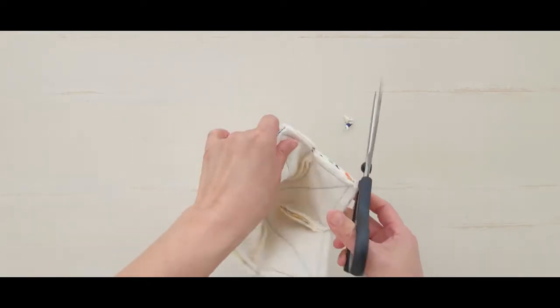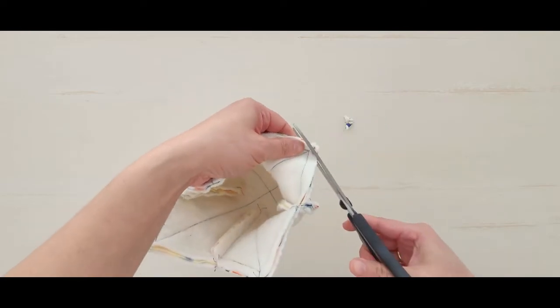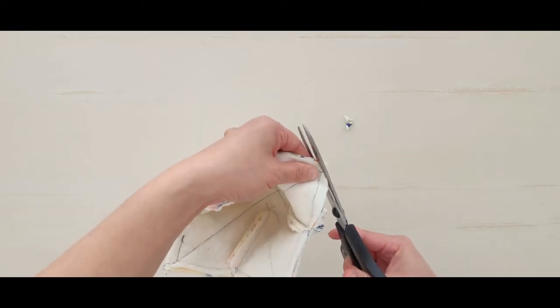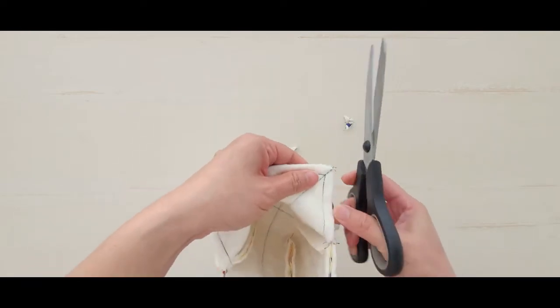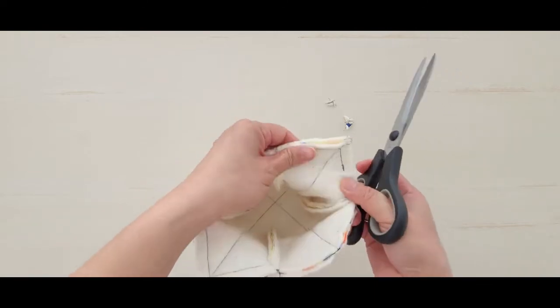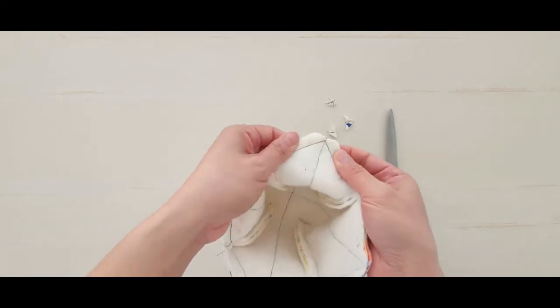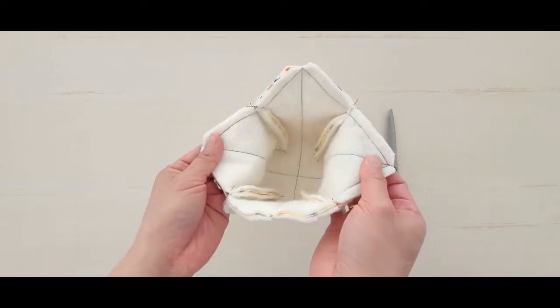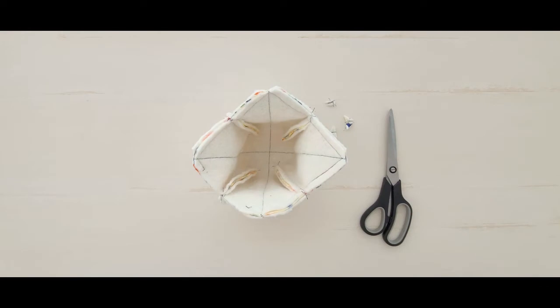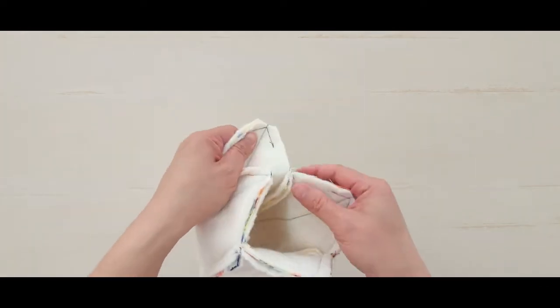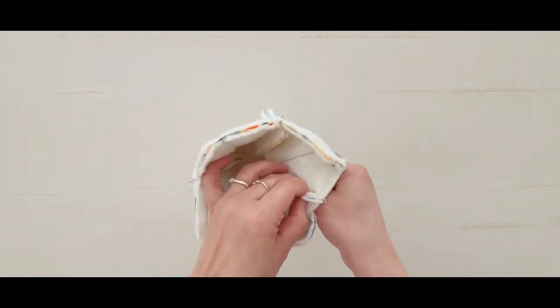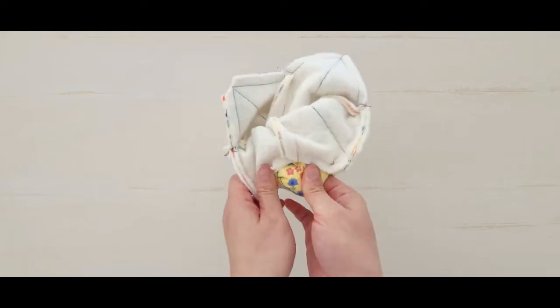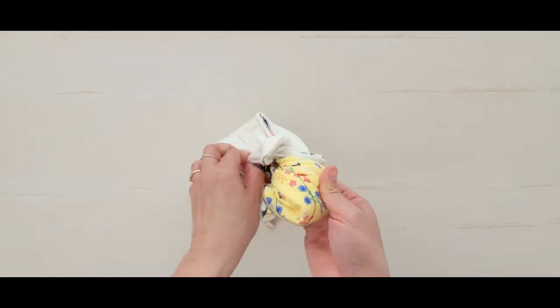Clip each corner to reduce bulk, then turn the ice cream cozy right side out.